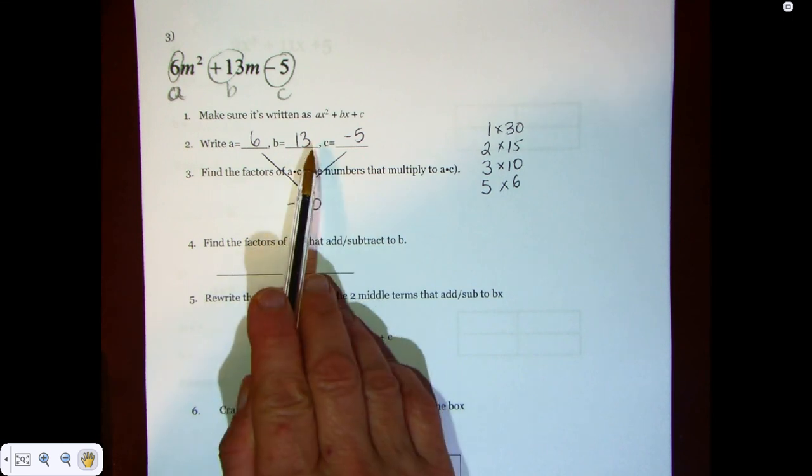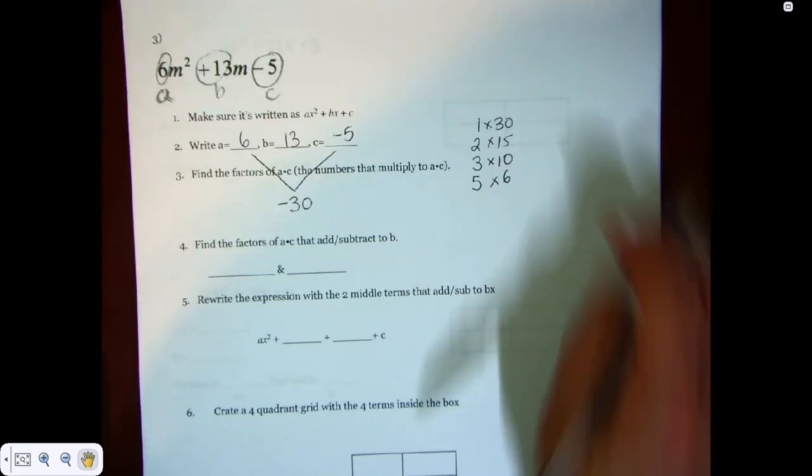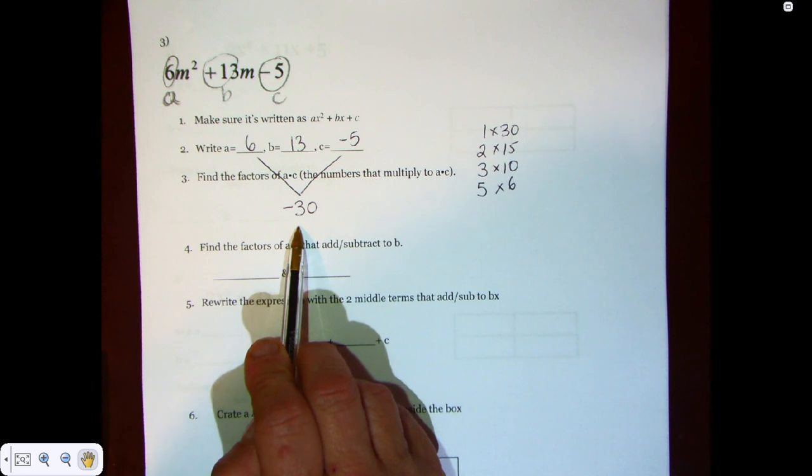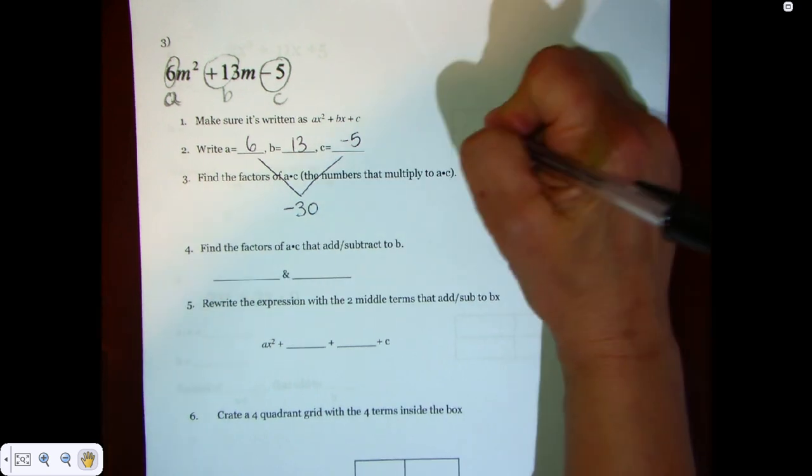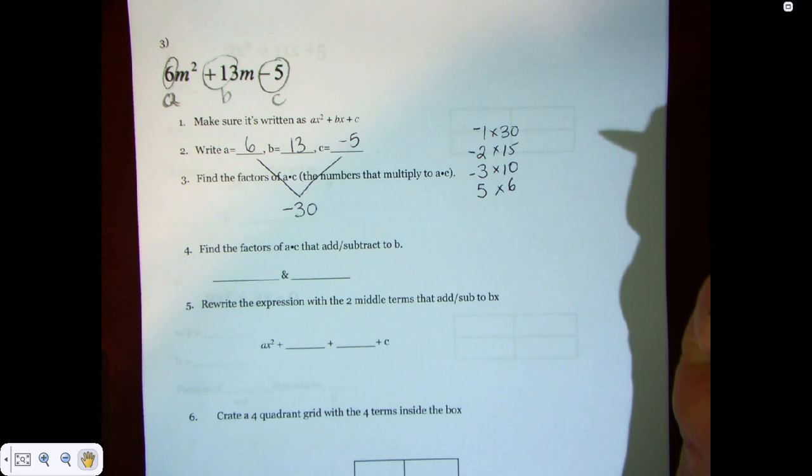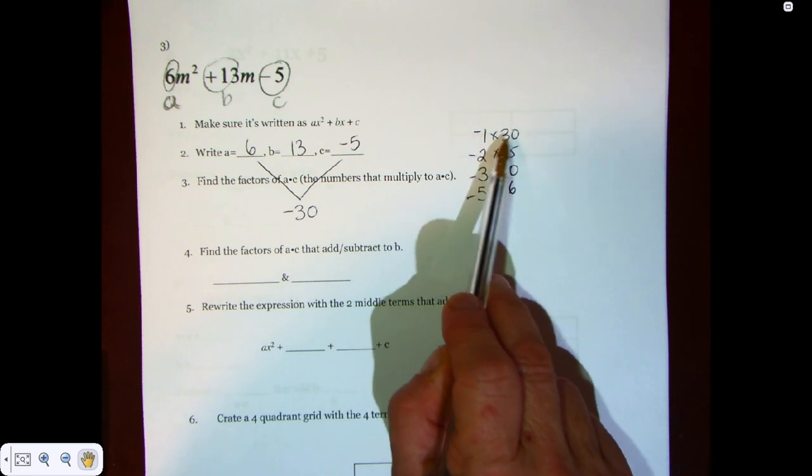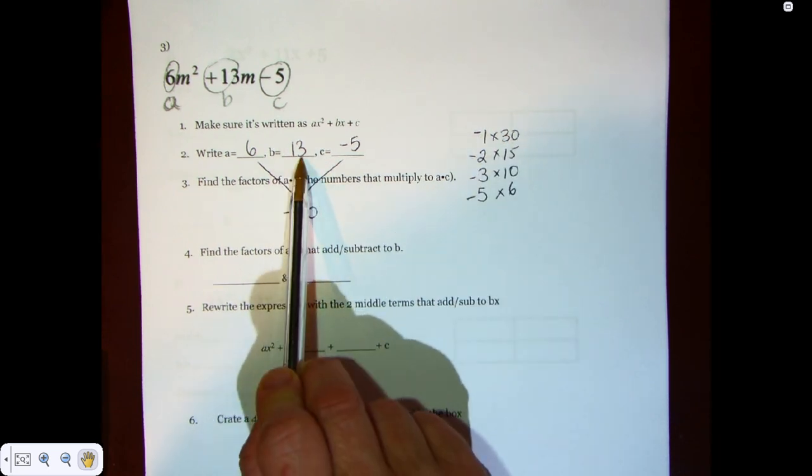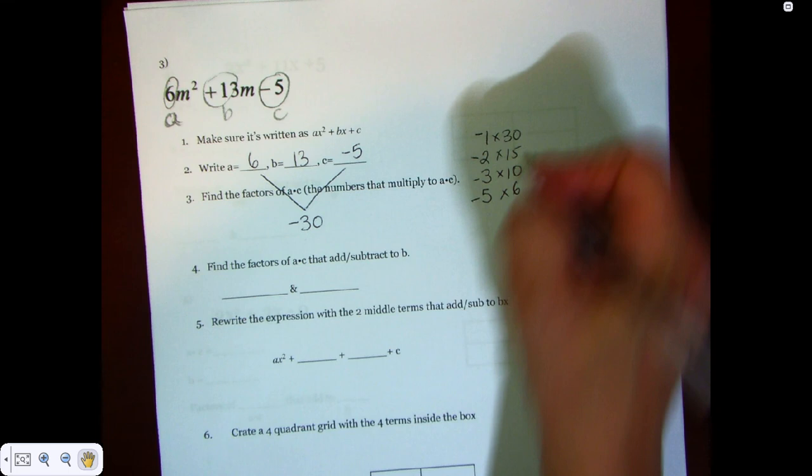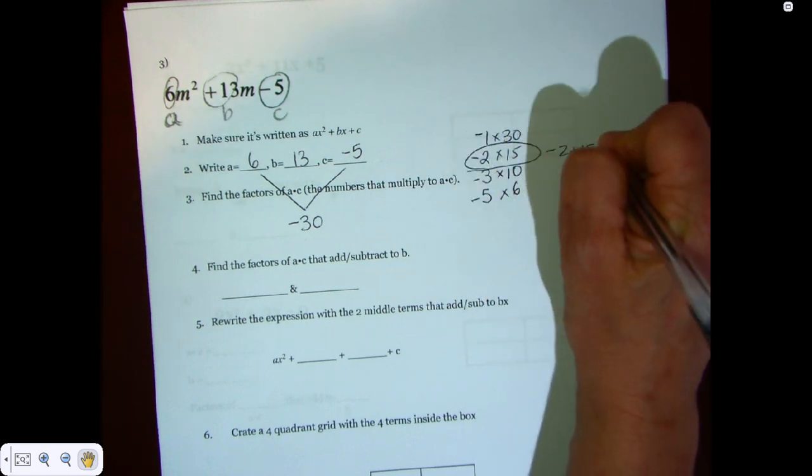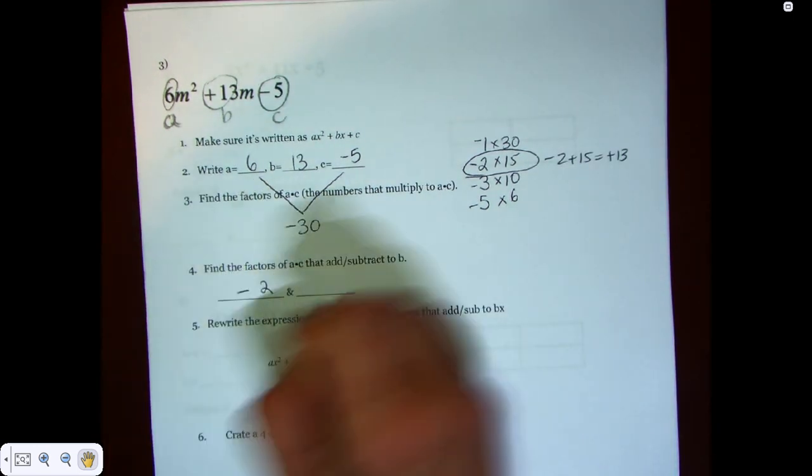So we want to know which of them add up to 13. To multiply to negative 30 and add to positive 13, we know the bigger number should be positive. So this is going to be negative, negative, negative, and negative. Because we have a positive and a negative adding up to a positive number, that means the larger number is positive. Looking at our numbers, it's pretty clear that negative 2 plus 15 is equal to positive 13.